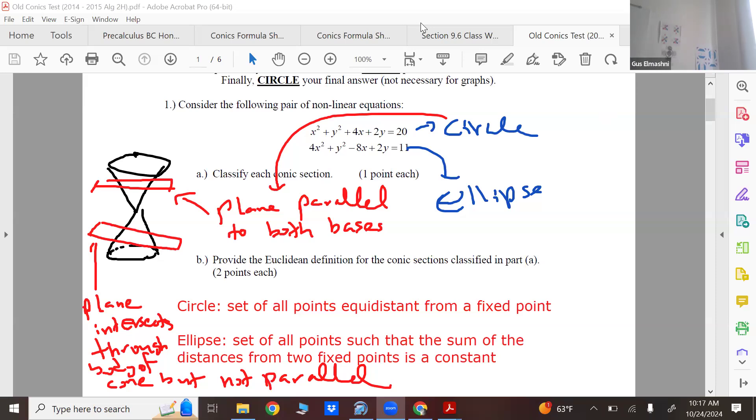Okay, so that's the circle because you have two square terms that are both the same sign and same coefficient. With an ellipse, you have two square terms both same sign but different coefficients. That's an ellipse, that's what we classify.